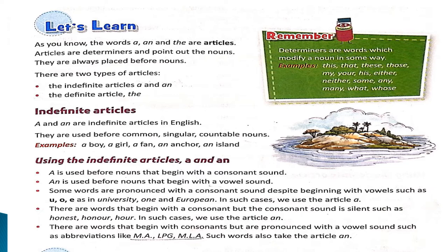Let us look at the article 'an'. When you want to place the article 'an', you must remember that you place the article 'an' in front of words beginning with vowels — that is A, E, I, O, U. And there are words that begin with a consonant, but the consonant sound is silent, such as 'honest', 'honor', 'hour'. In such a case, we also use the article 'an'.